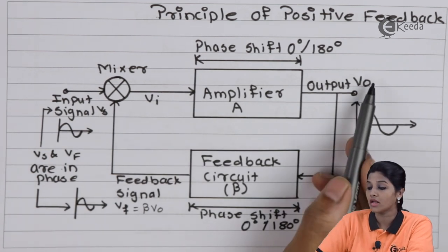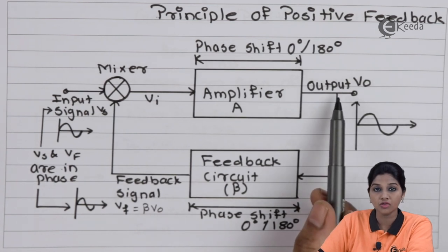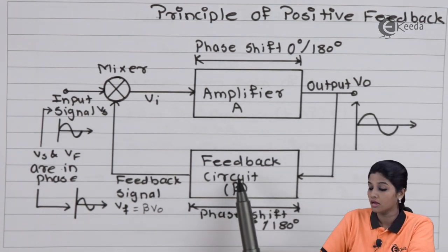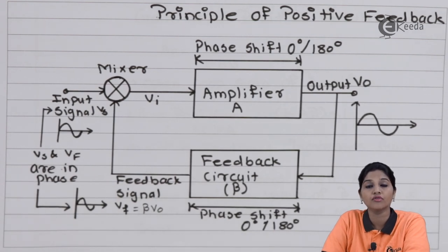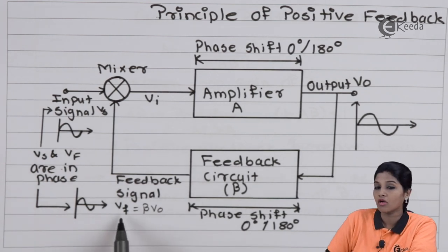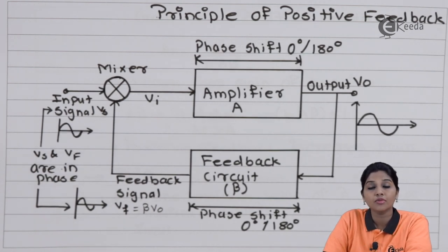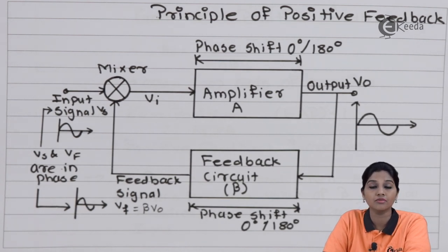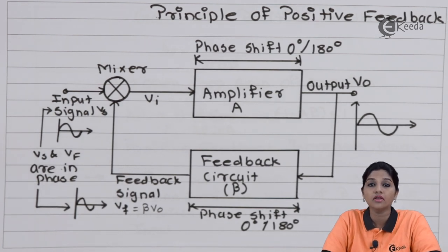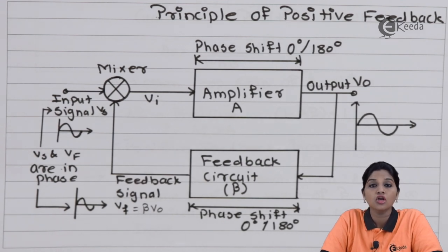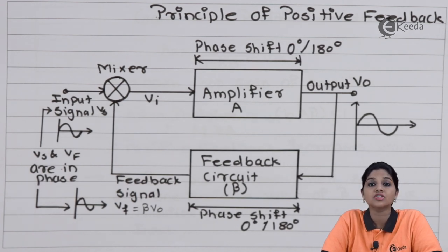The output of the amplifier is called signal Vo, which acts as an input to the feedback circuit. The feedback circuit has a feedback factor beta and produces the feedback voltage Vf, where Vf equals beta times the input signal applied to the feedback network. The feedback network also introduces a phase shift of zero degrees, and therefore the feedback signal and input signal are in phase with each other. When the feedback and input signal are in phase, the circuit is called a positive feedback circuit.